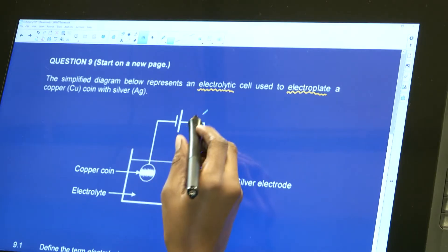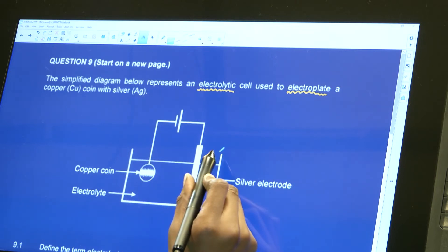I want to show you the difference between the two cells before we start answering, so you know how to identify them. With this cell here, I can see that I have a battery and everything is in one beaker.